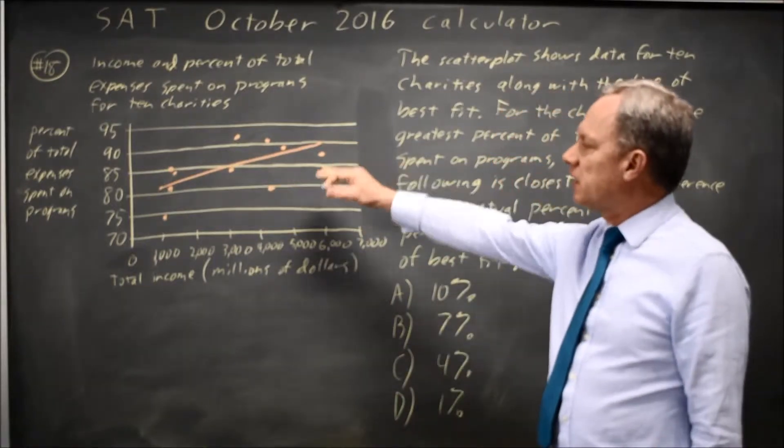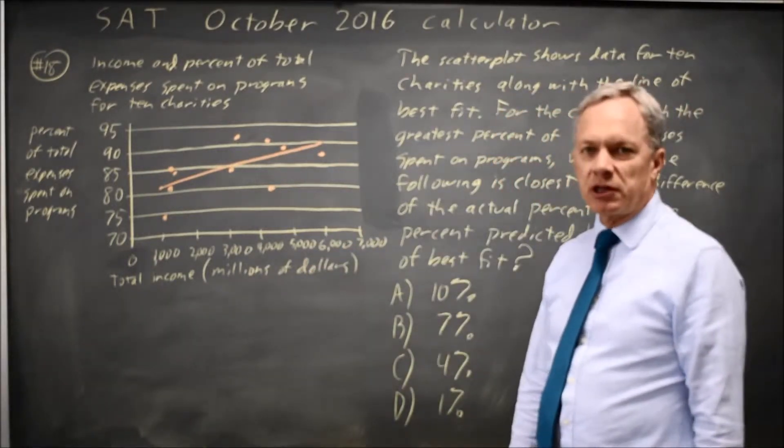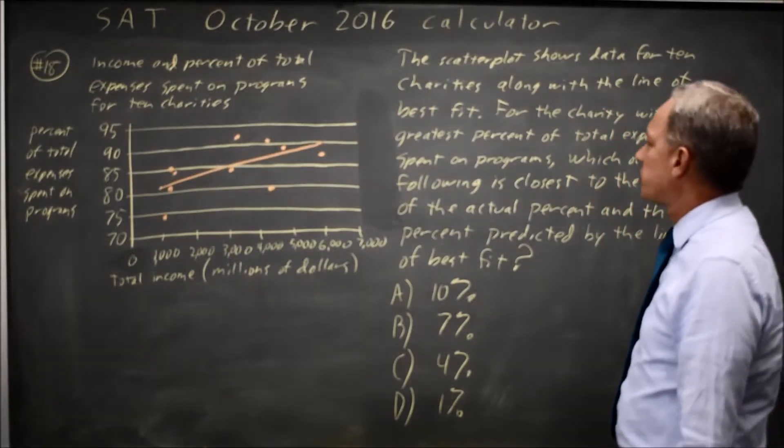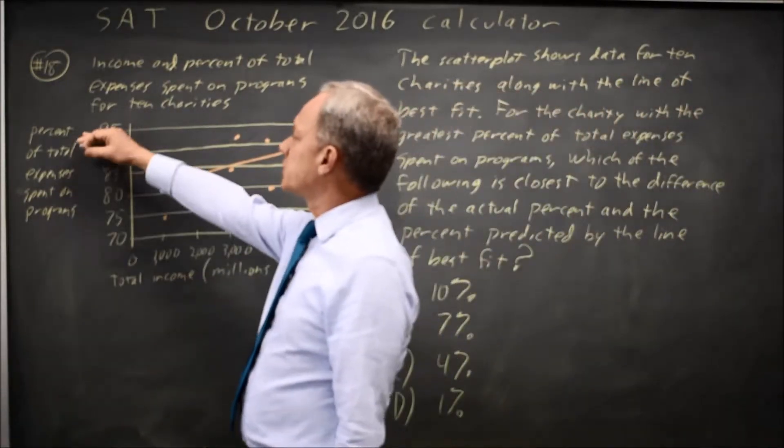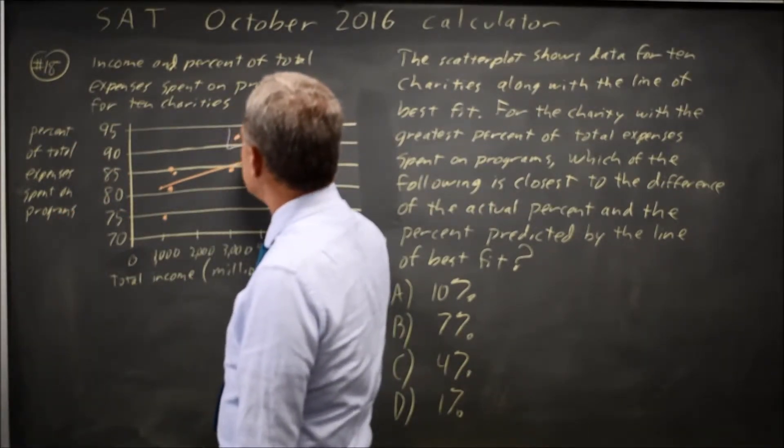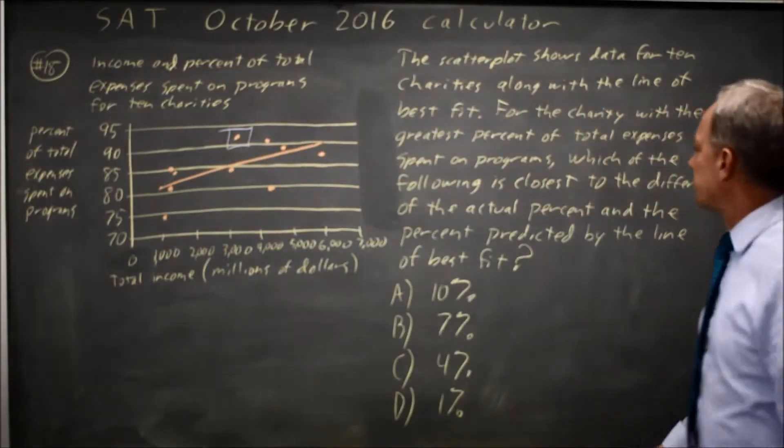College Board gives us a scatter plot with a line of best fit. Their question is: for the charity with the greatest percent of total expenses, which is the Y value, so the point with the greatest Y value is this point here. For that charity,